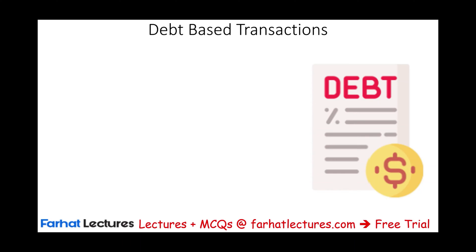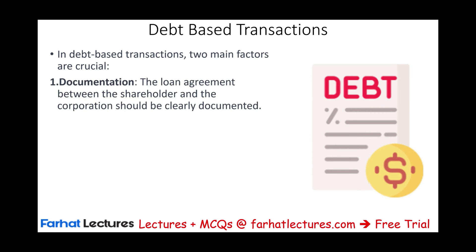Start your free trial today. The first thing we need to know about debt transactions is they have to be based on two main factors. The first is documentation. Even if you own the corporation 100%, there should still be documentation and an agreement between the lender and the borrower — between the corporation and the shareholder. Documentation is critical.